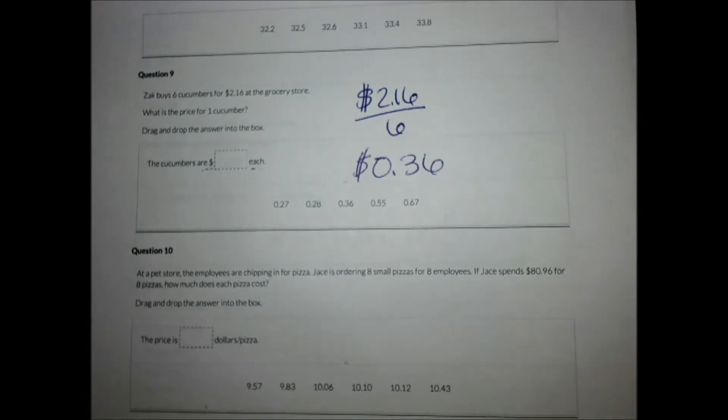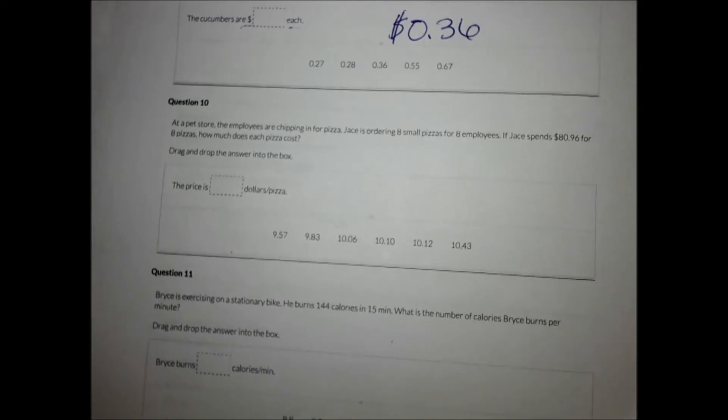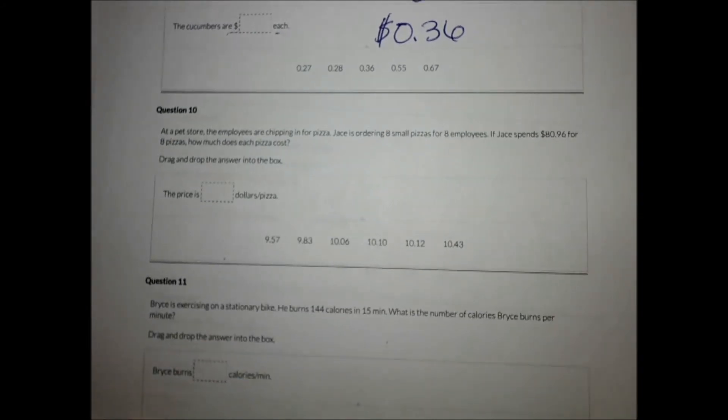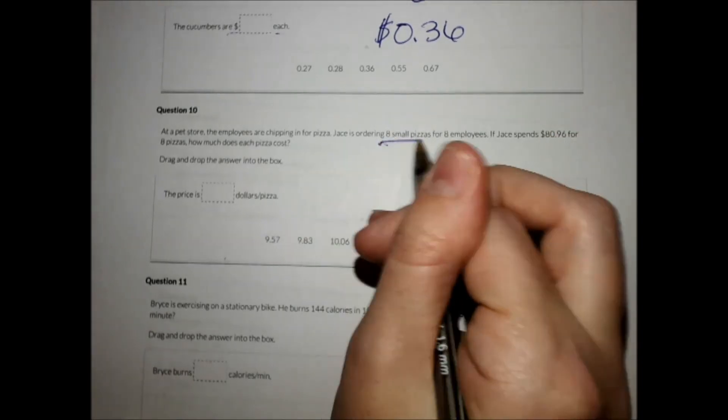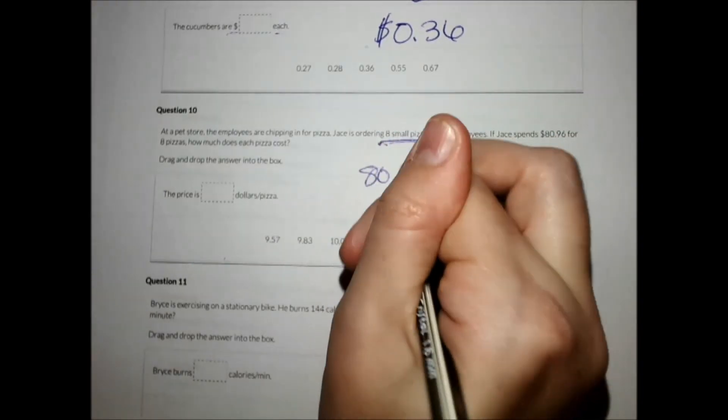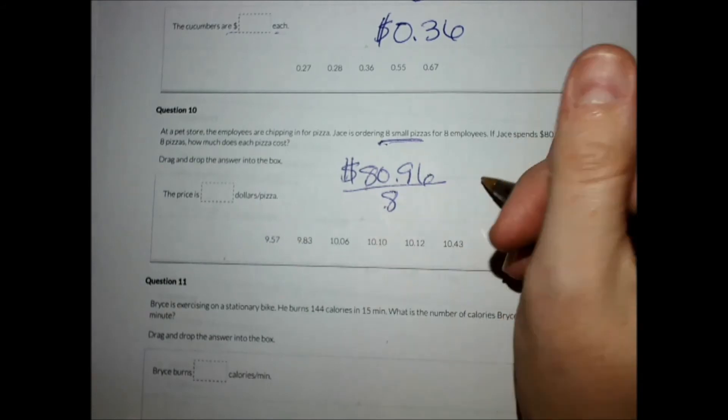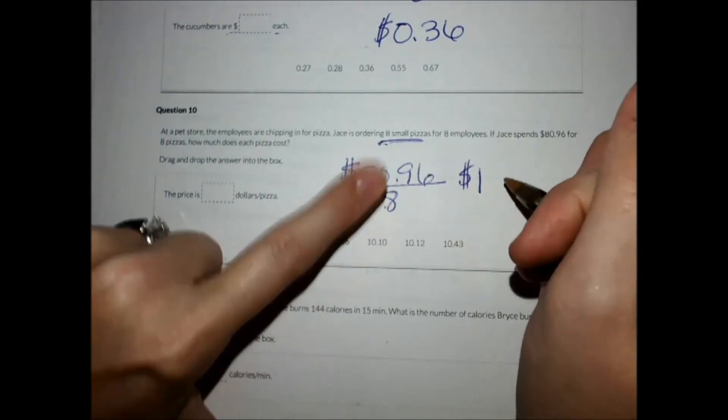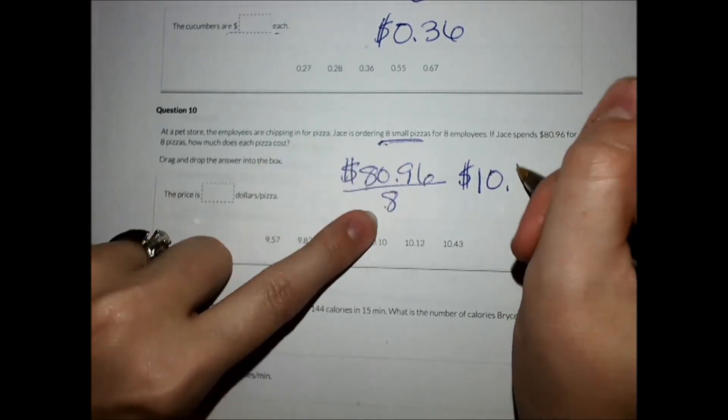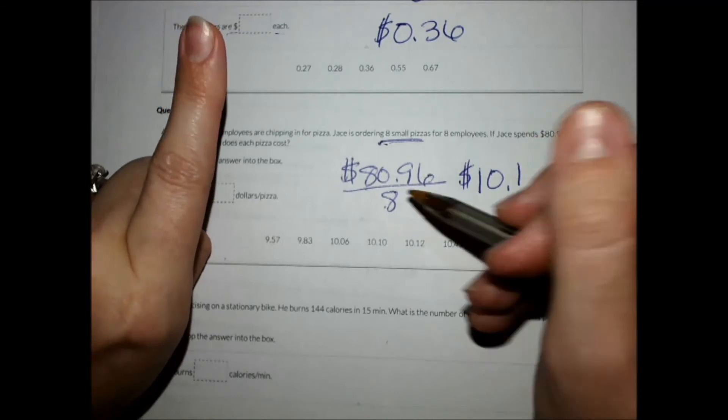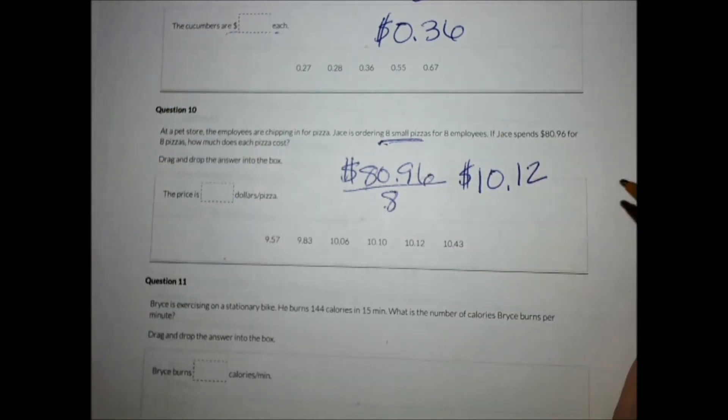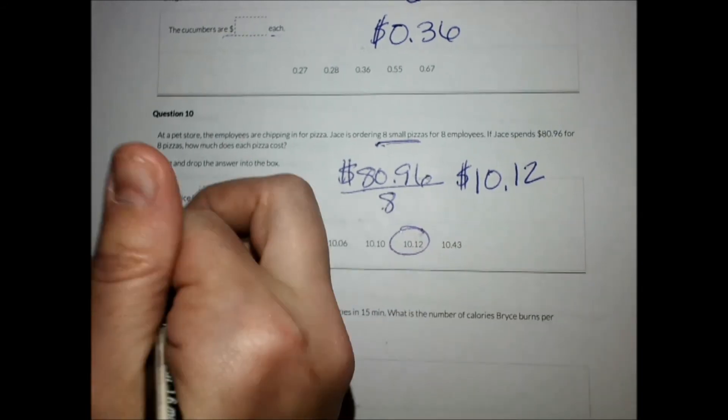Number 10. I'm going to scoot this up. At a pet store, the employees are chipping in for pizza. Jace is ordering eight small pizzas for eight employees. If Jace spends $80.96 for eight pizzas, how much does each pizza cost? So he bought eight small pizzas. $80.96 for eight pizzas. I could say eight goes into eight one time, eight goes into zero zero times, eight goes into nine one time with one left over, and eight goes into 16 two times. So my answer would be $10.12.